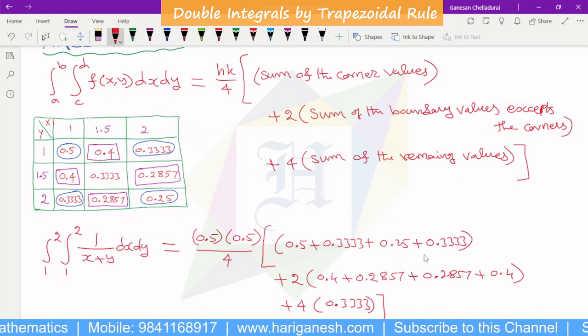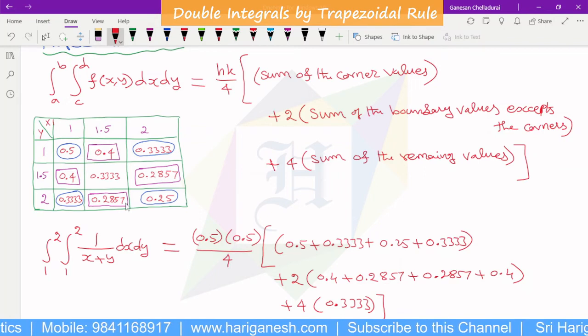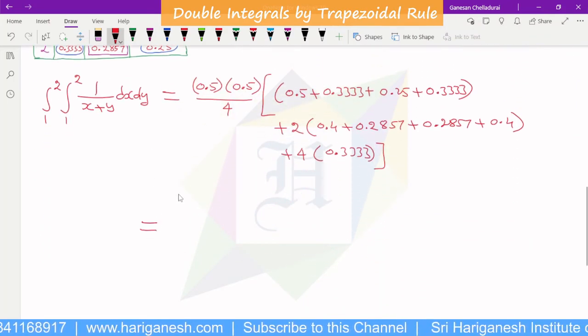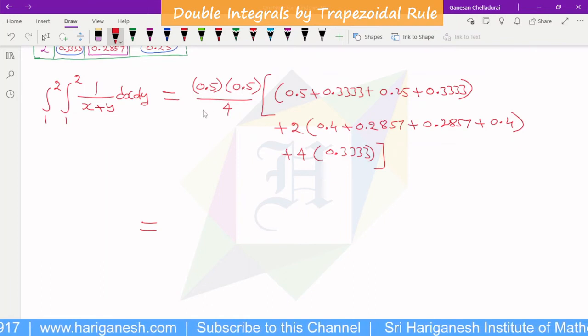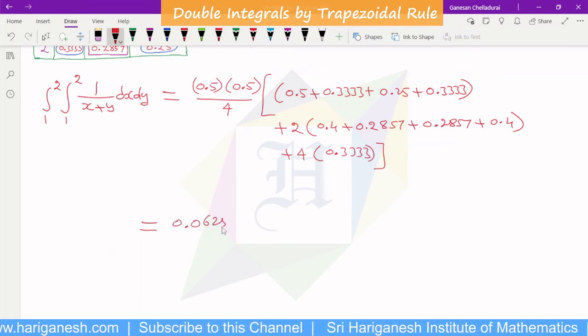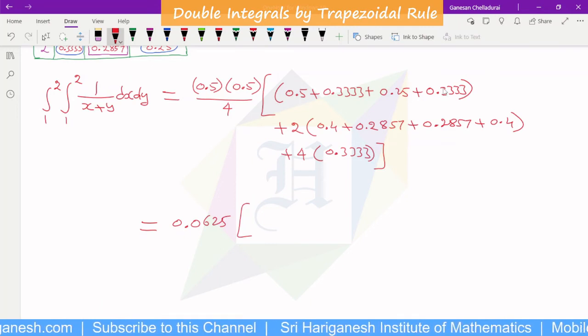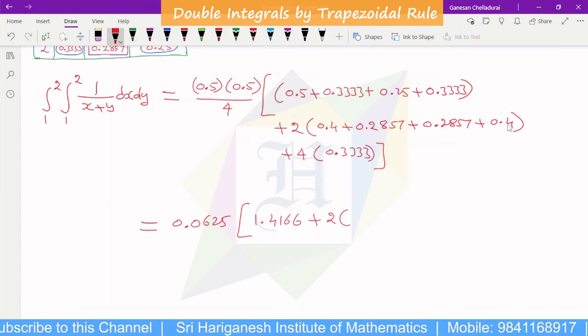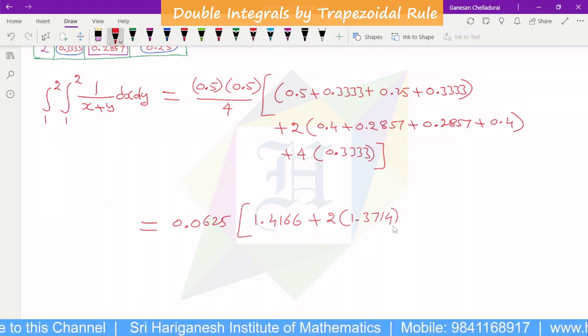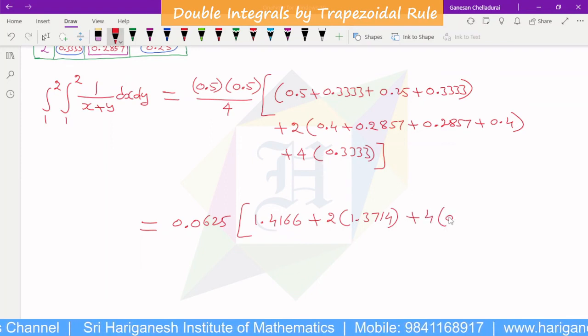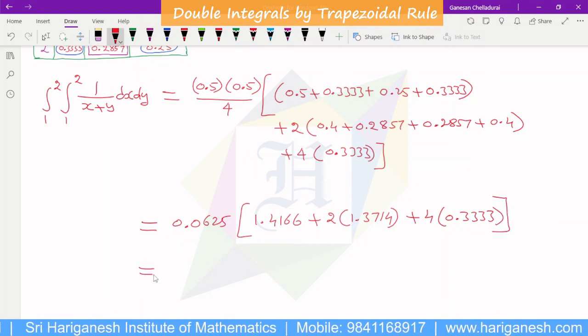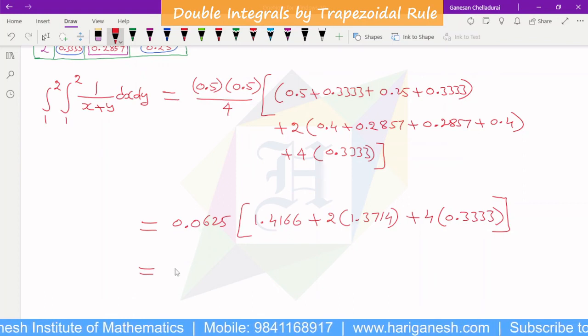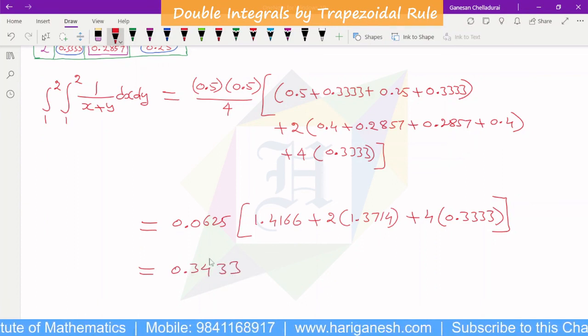Substitute the value, divided by 4. At the point of the value, 0.0625. The value 1.4166. In the bracket with this value, add 1.3714 plus 4 times of value is 0.3333. For final, you can use complete calculator to use. You can add multiple values and multiply. 0.3433 is the answer.